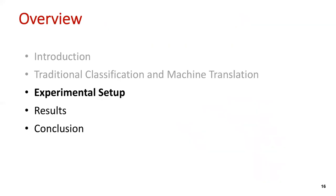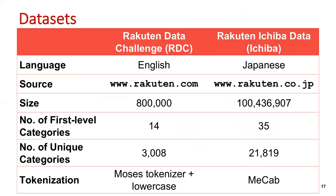We present the experimental setup to test machine translation against a state-of-art neural net-based classification system on two datasets. The first is the Rakuten Data Challenge (RDC) dataset, recently used in a SIGIR shared task. The RDC data is in English from the Rakuten.com site and contains 800,000 product titles, with 14 first-level categories and 3,008 total unique categories.